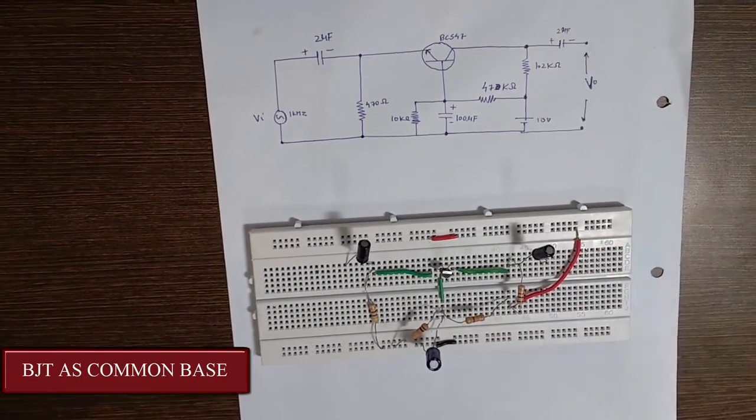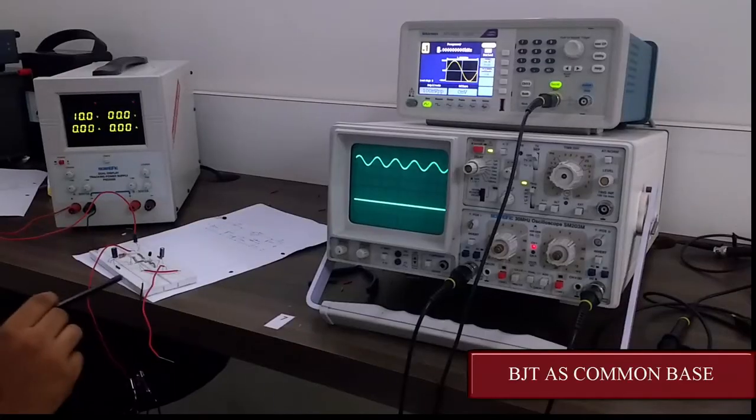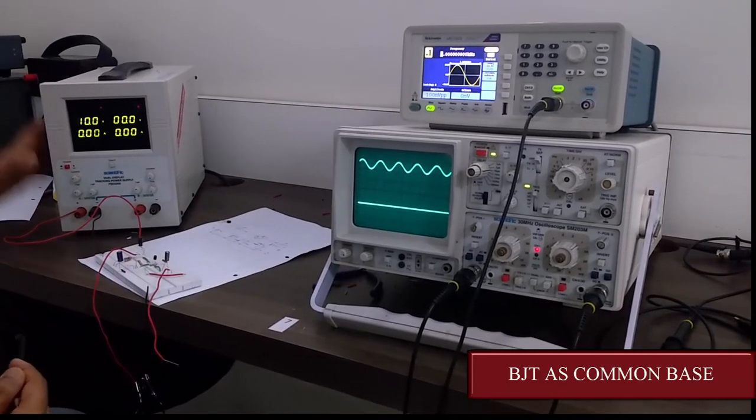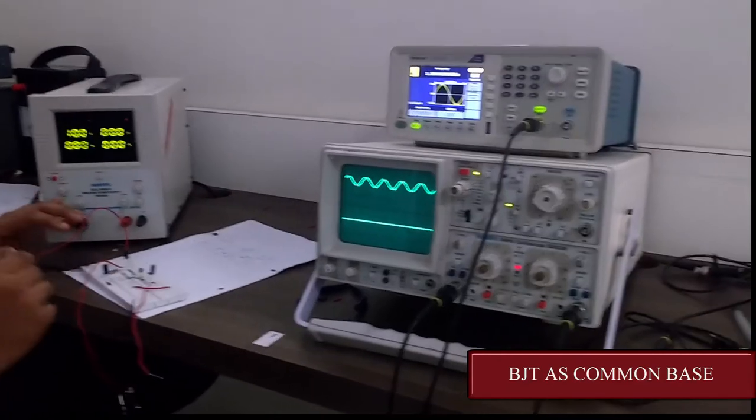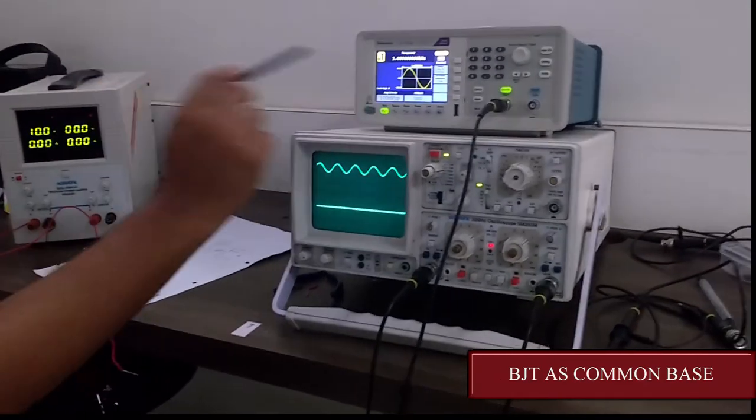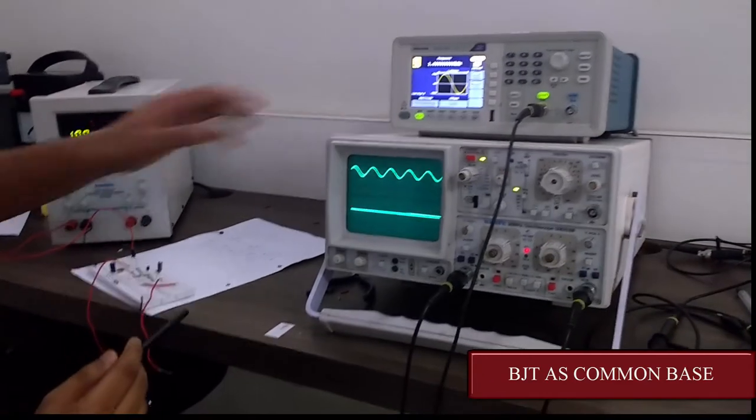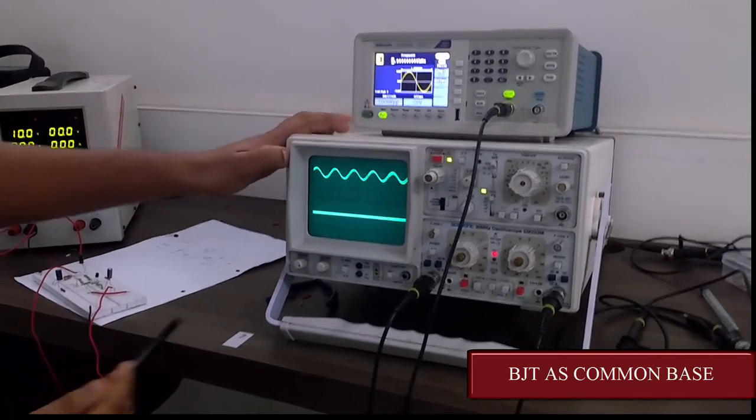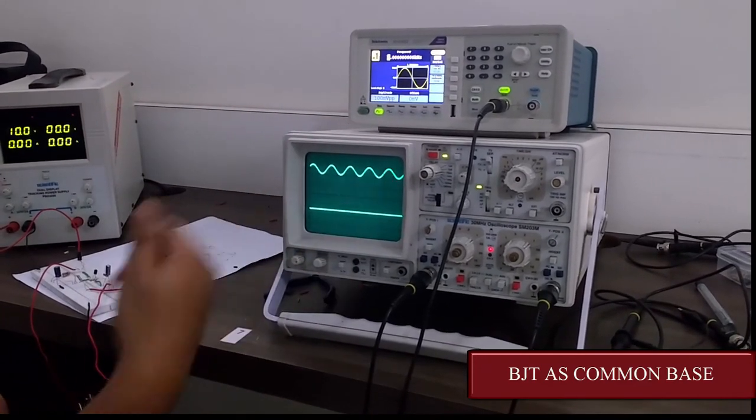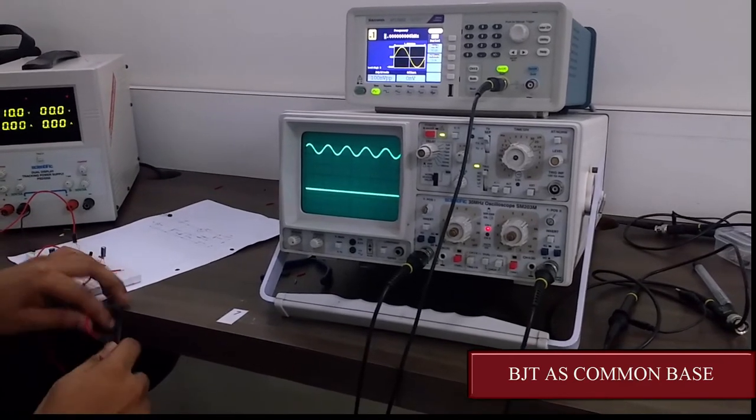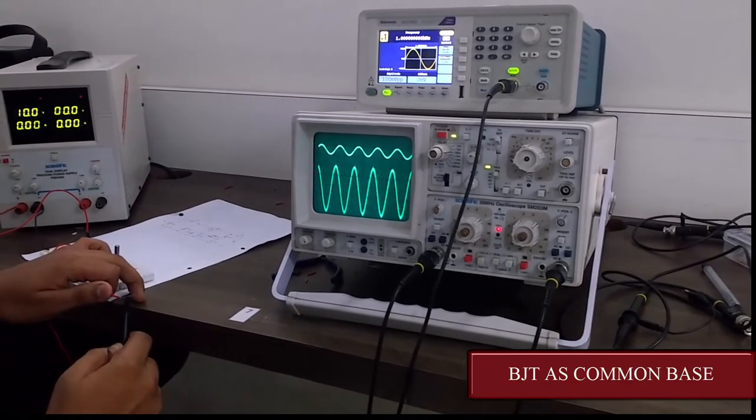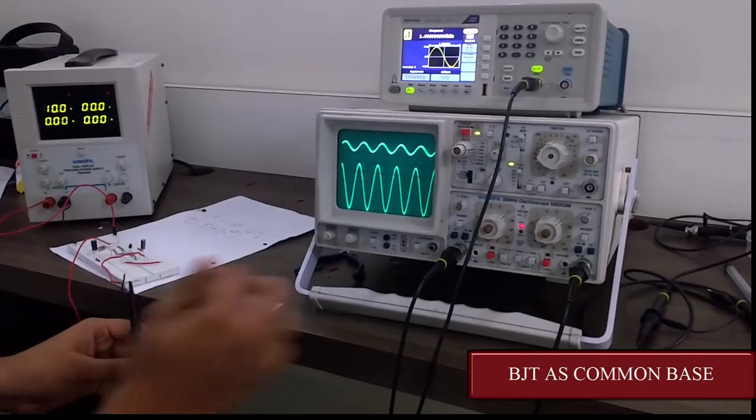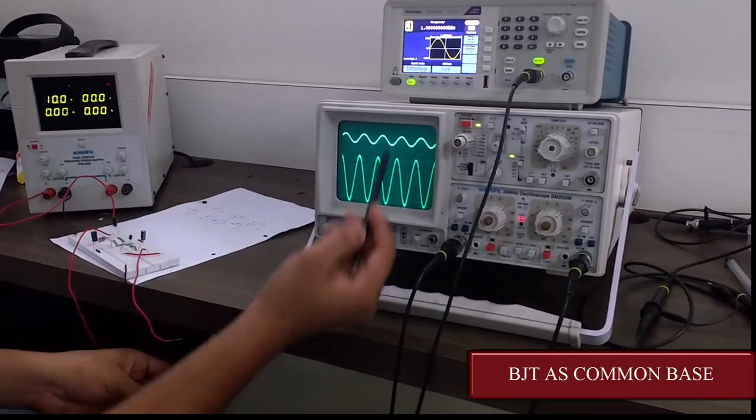Let us apply the voltages and see the output. The voltage supply is already set at 10 volts. The voltages are given now. This is the frequency generator which gives a frequency of 1kHz and the voltage is 100mV. This is the input which we have given. Now in order to see the output, the output wire is connected to channel 2 of the CRO. This is the output obtained.